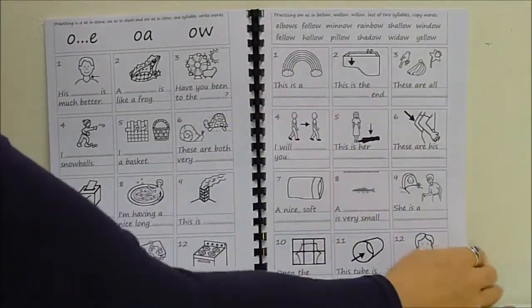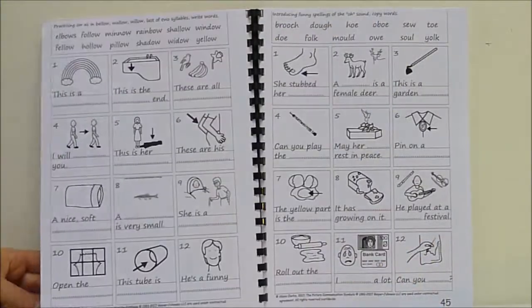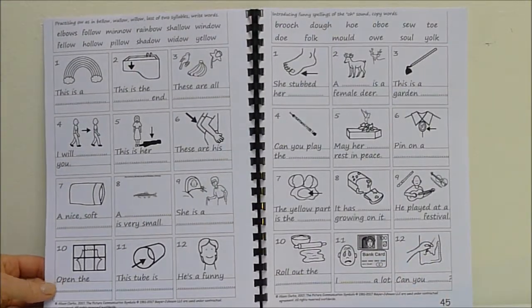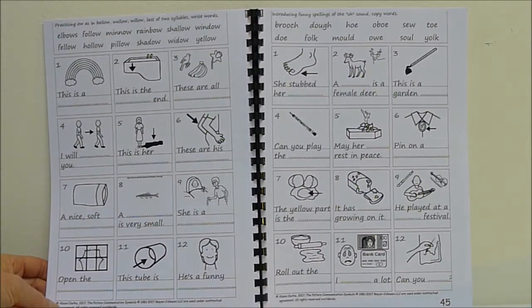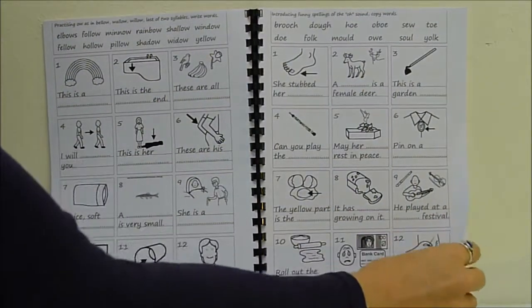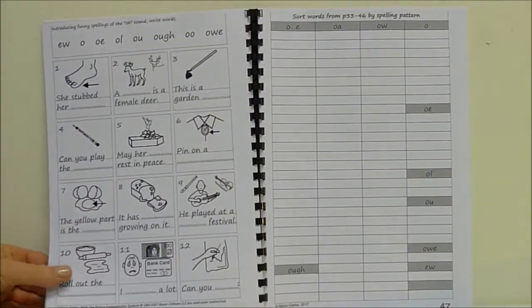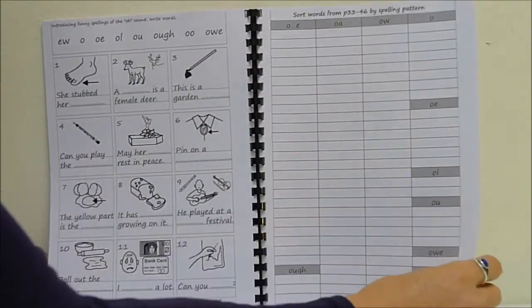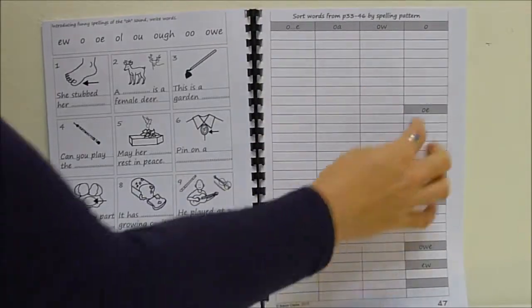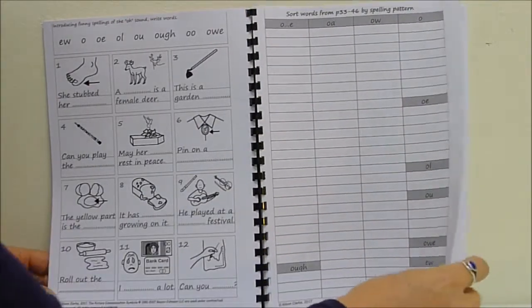Now, some two syllables, elbow, follow, minnow, rainbow. And then some funny spellings of O, like the yolk of an egg and sewing things with a needle and toe. I stubbed my toe and then put them into a chart again. So you've got a bit of a snapshot. How do we spell O? These are the main spellings. These are the funny ones. Don't panic. There's not too many of them.